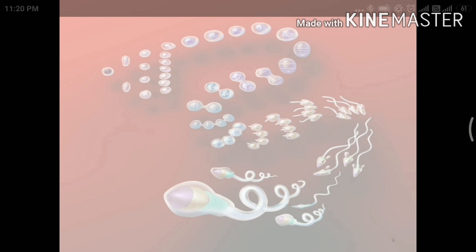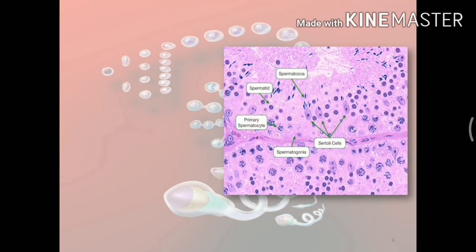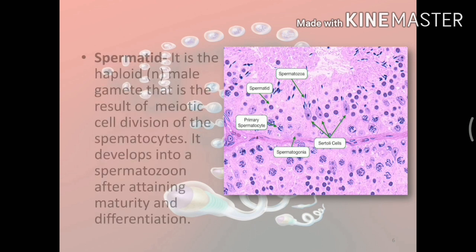Now, what is a spermatid? As we can see in the histological section, a spermatid is the haploid male gamete that is the result of the meiotic division of the spermatocytes. It develops into a spermatozoa after attaining maturity and differentiation. From this we know that spermatid is the former stage of a spermatozoa.